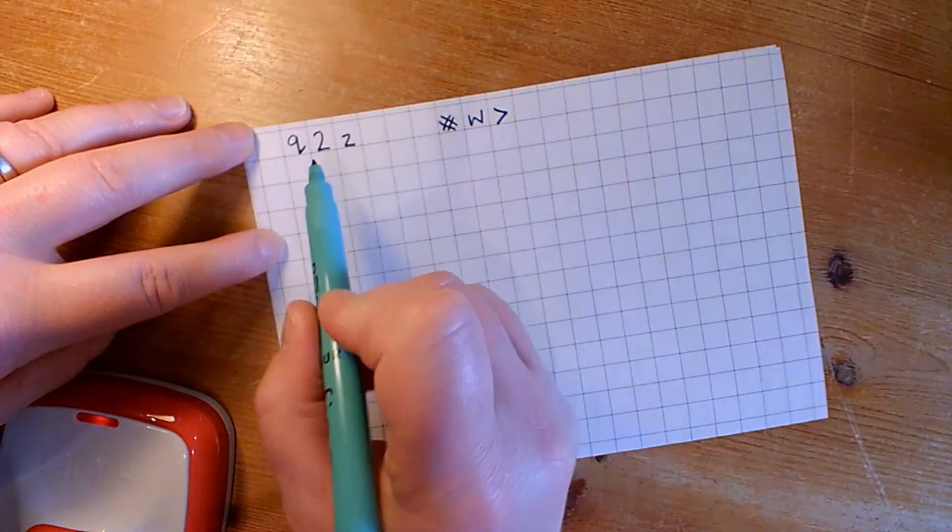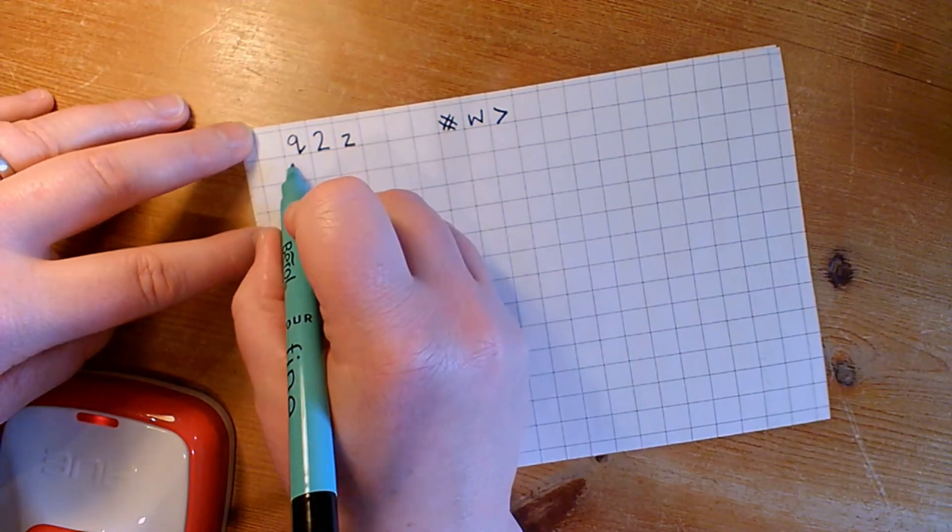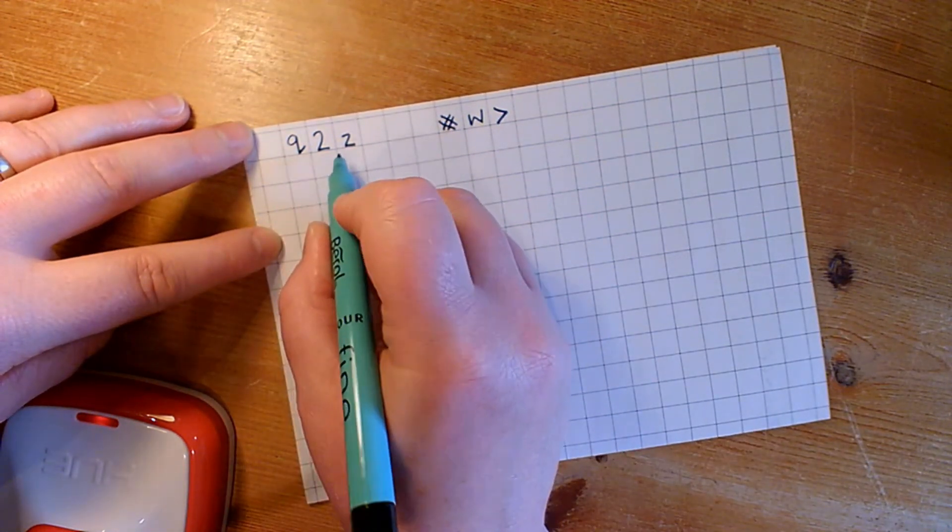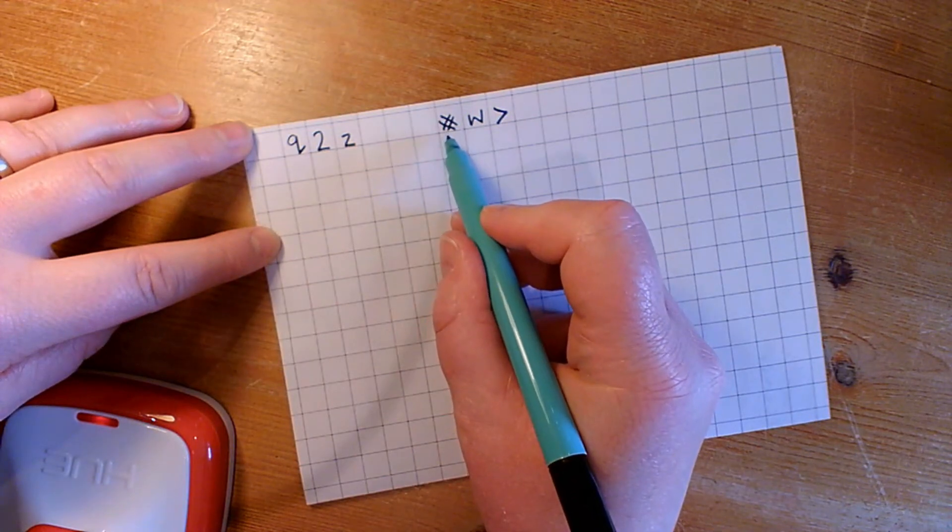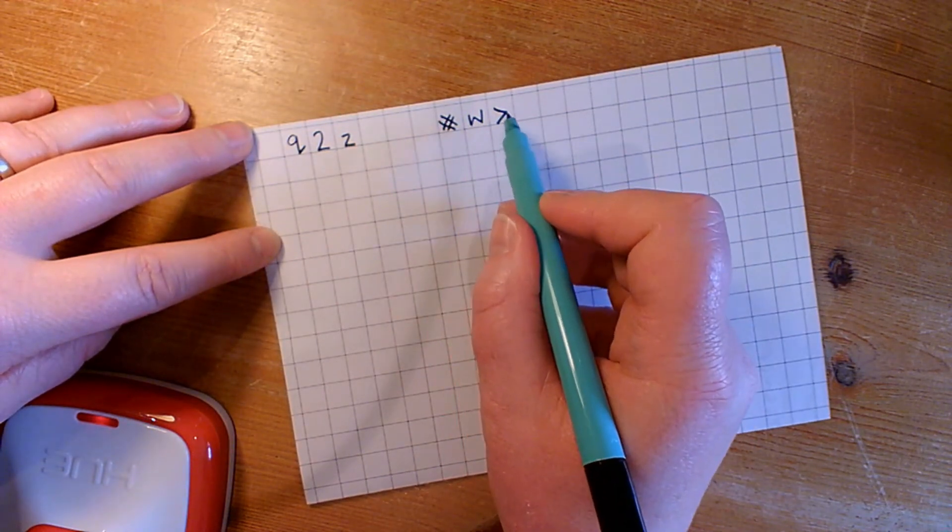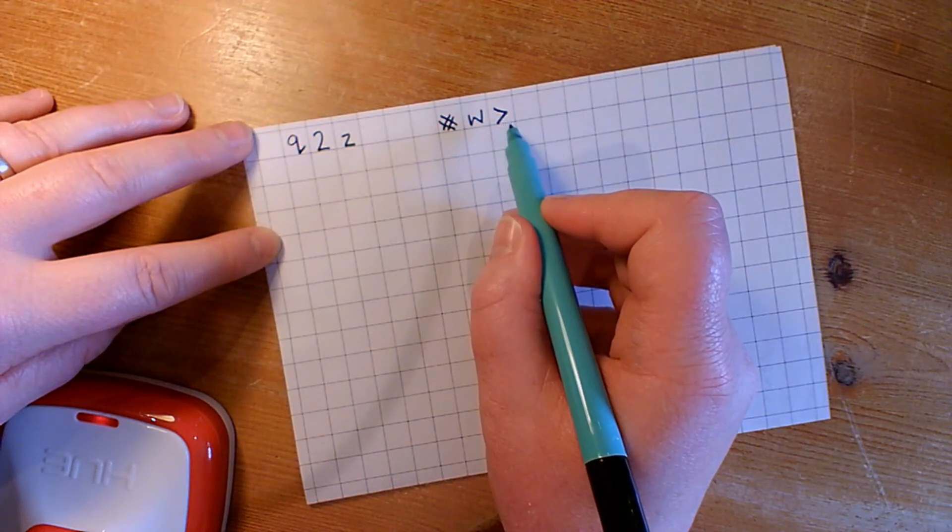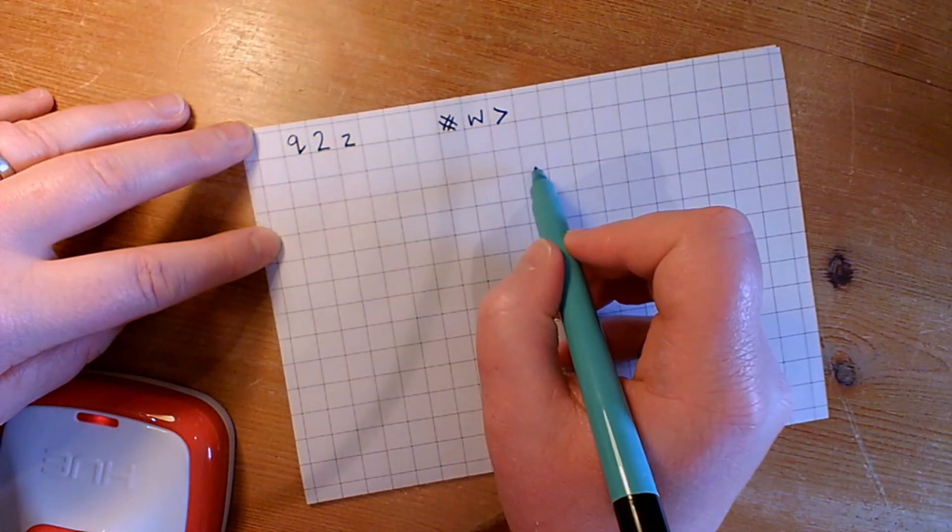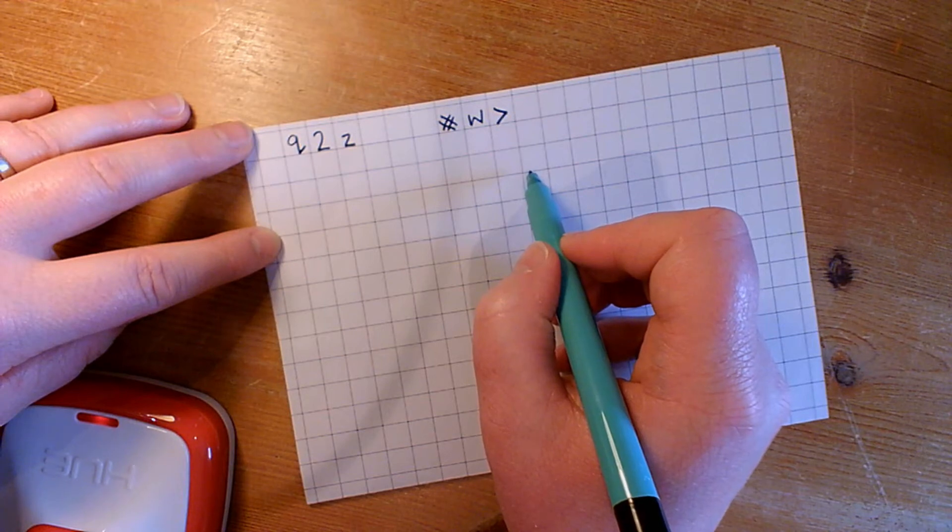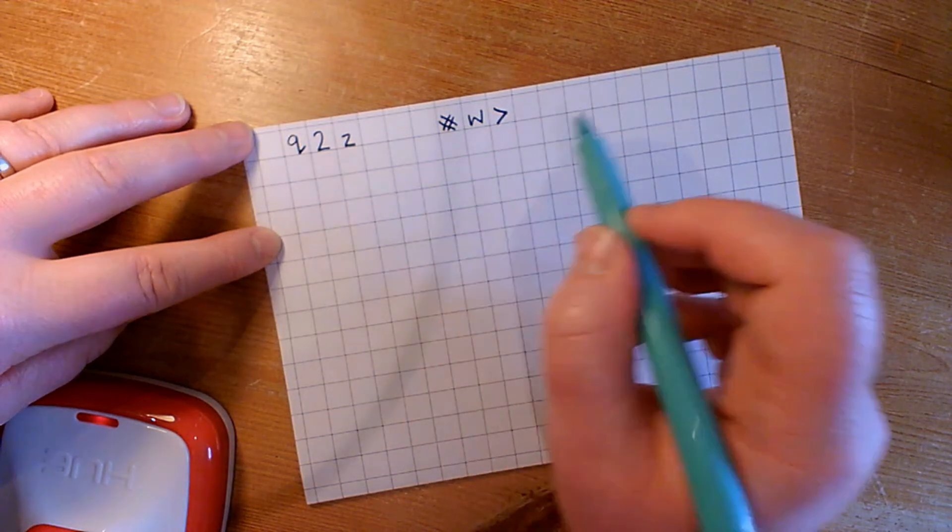Okay, final example. I have a ciphertext message Q2Z and a key of hashtag W and the greater than. So, what I'm going to do is quickly show you how to work this out and to get the word from the ciphertext.